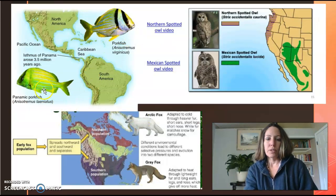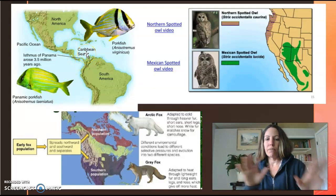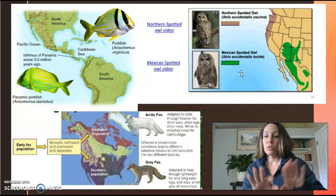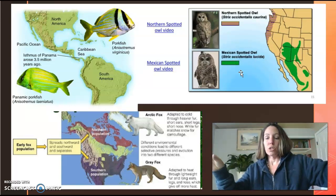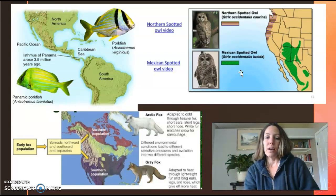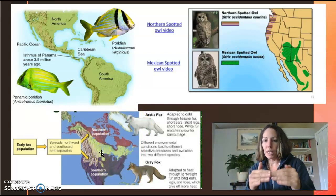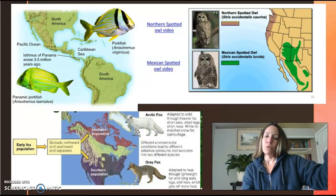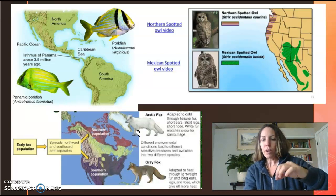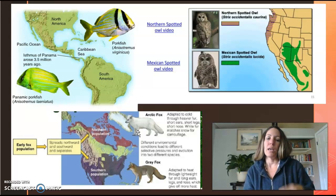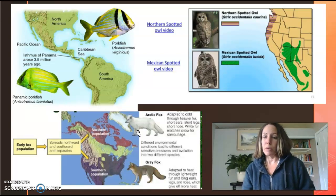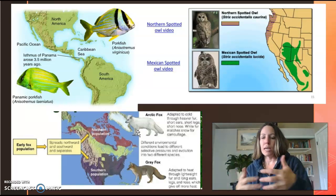Here are some more examples. You've got different types of porkfish based on which side — the Caribbean versus the Pacific. You also have the northern spotted owl versus the Mexican spotted owl; somehow the original population traveled to different sides and never came back. The Arctic fox and the gray fox also have a pretty big range but are not able to come back together. Those recessive alleles traveled with the Arctic fox, and because they're no longer mating with the gray fox, those recessive alleles became predominant in a snowy environment — give them a million years and they become a different species.